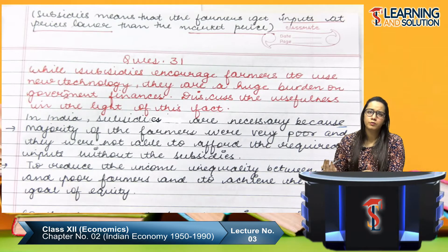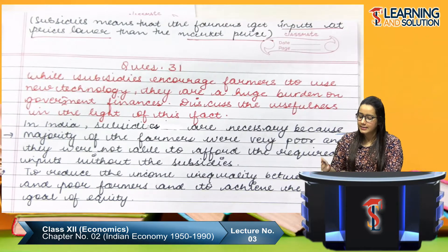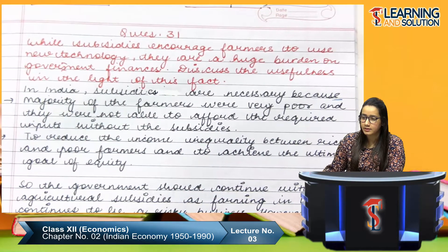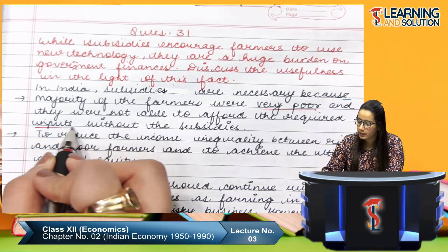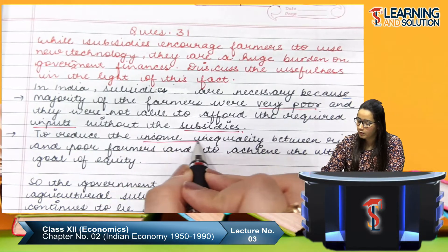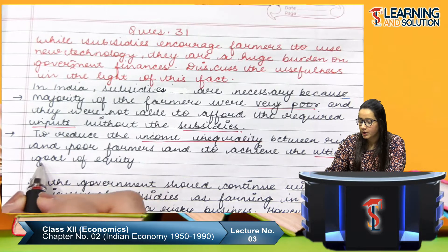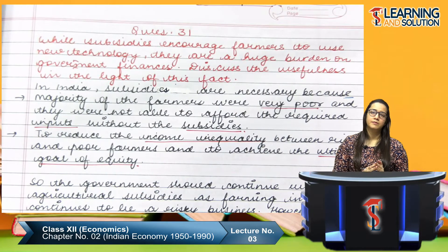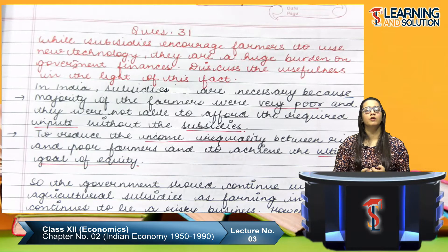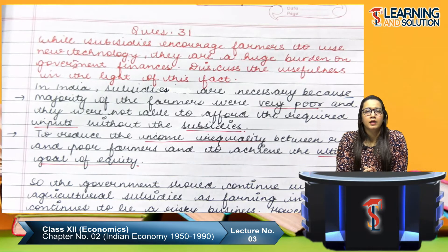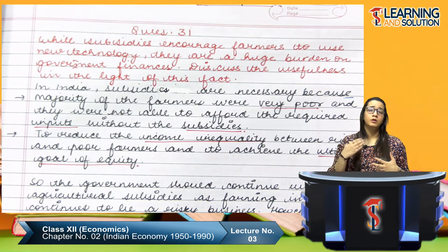In India, subsidies are necessary because the majority of farmers were very poor and were not able to afford the required inputs without subsidies. To reduce income inequality between the rich and the poor farmers and to achieve the ultimate goal of equity, subsidies were important. The majority of the farmers were living below the poverty line, so they could not even afford their basic food supplies, let alone seeds and fertilizers.